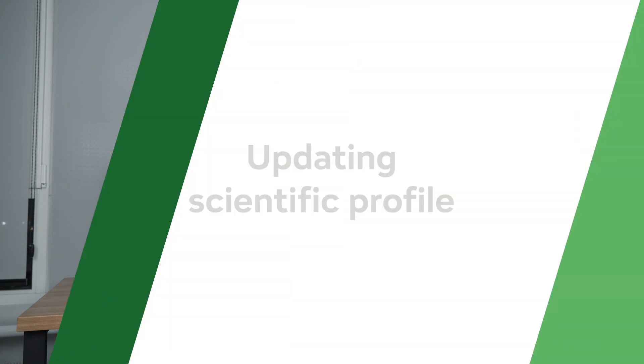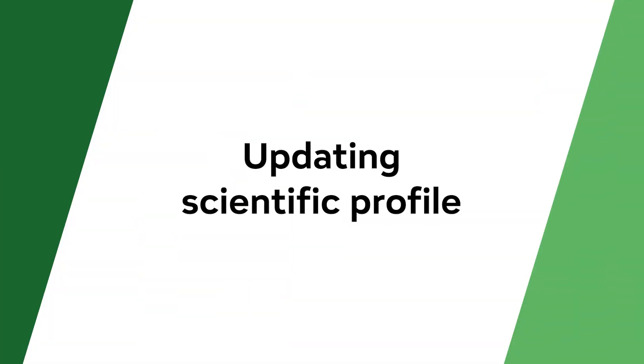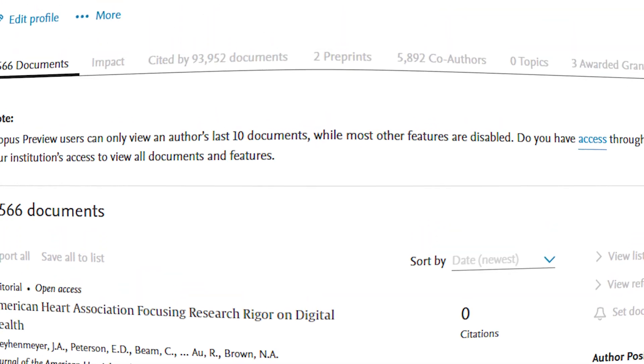Tip number five: Keep your profiles updated on scientific databases. Your profiles in Scopus, Web of Science, and Google Scholar are important for tracking your publications and citations. Make sure all your papers are listed and fix any errors that may appear in your profiles. Regular updates ensure that your research is correctly represented and easily found by other researchers.